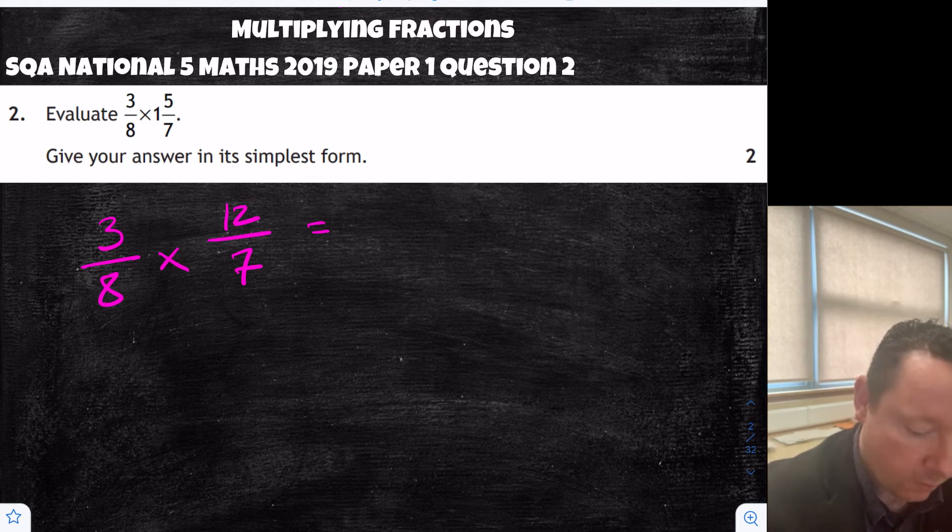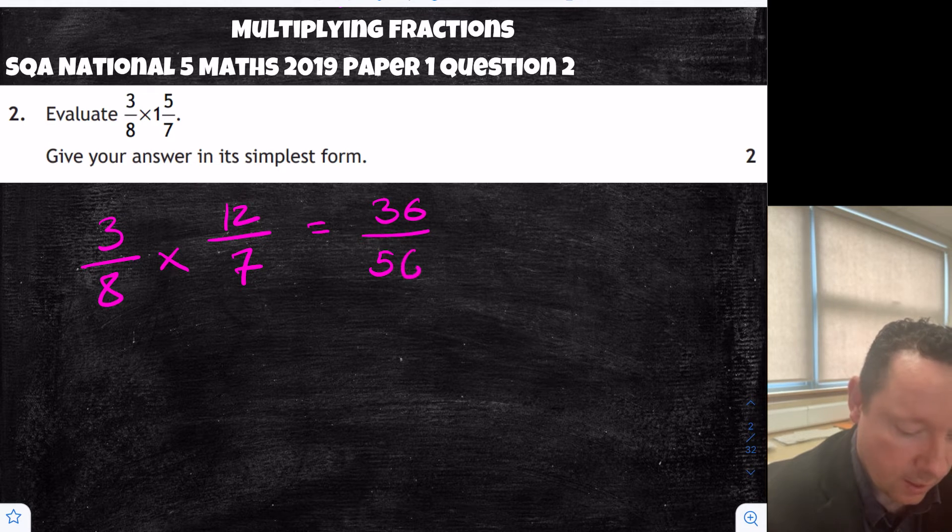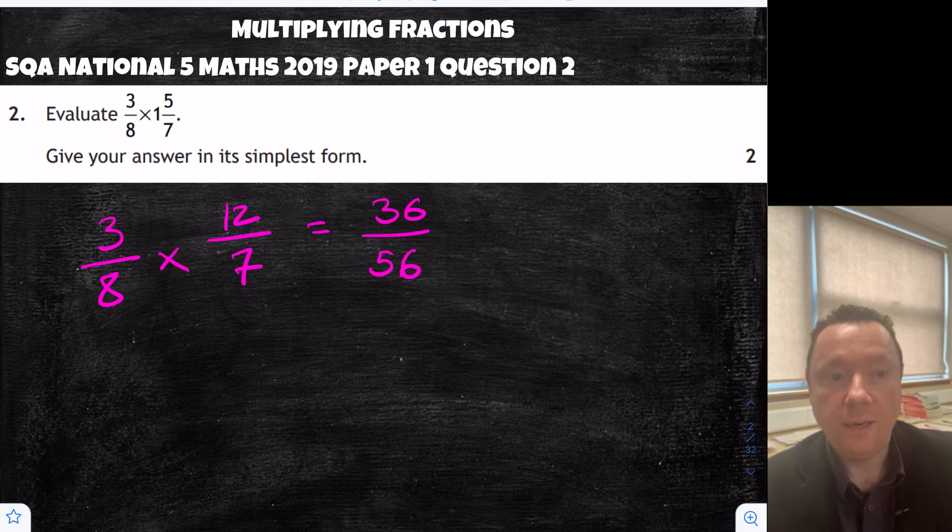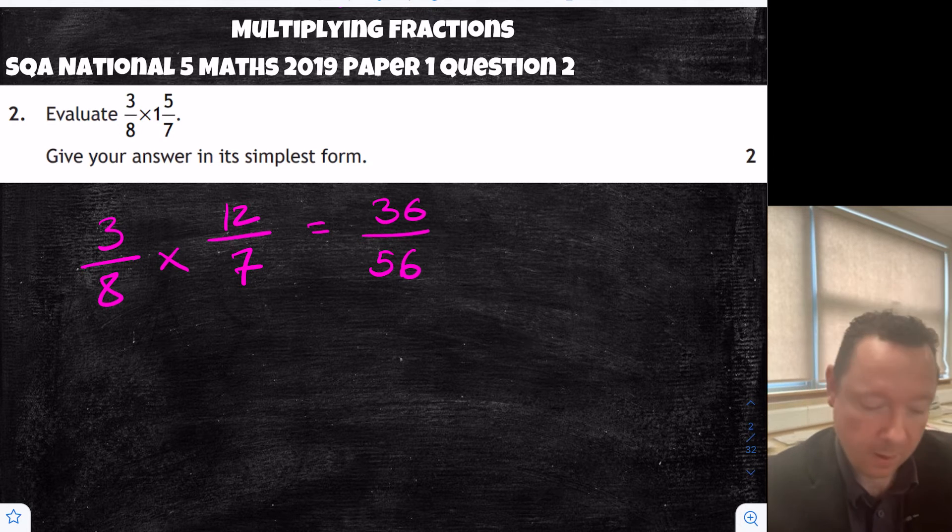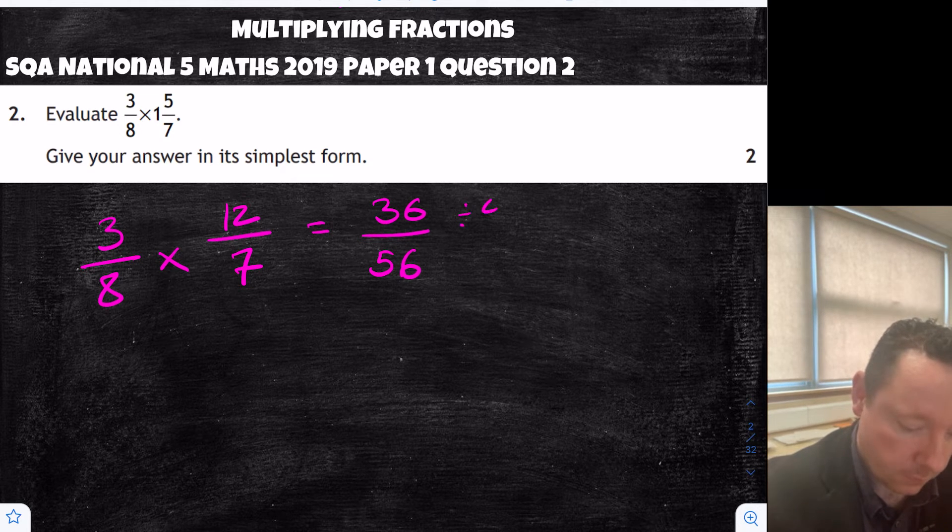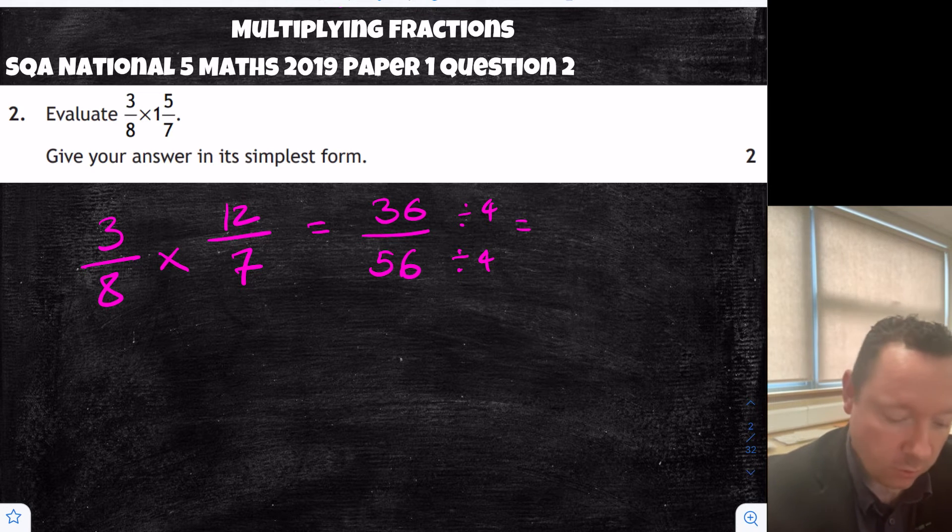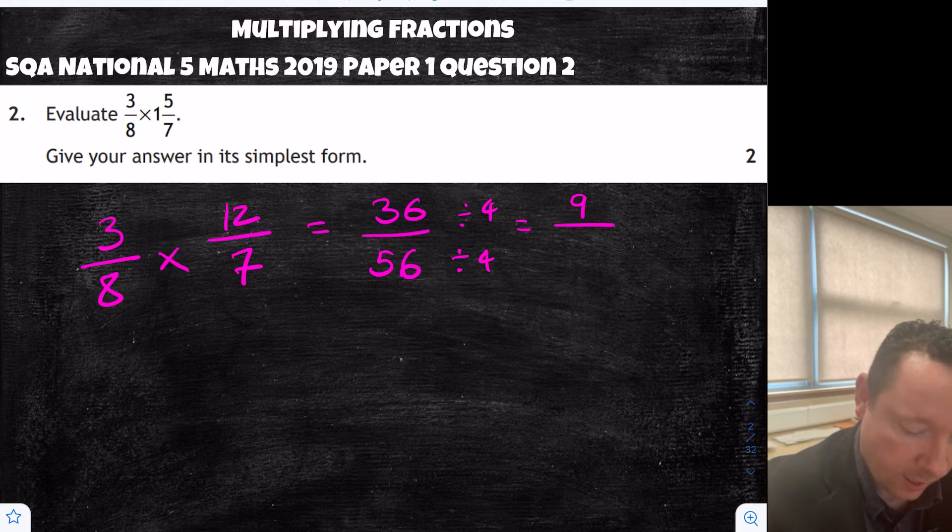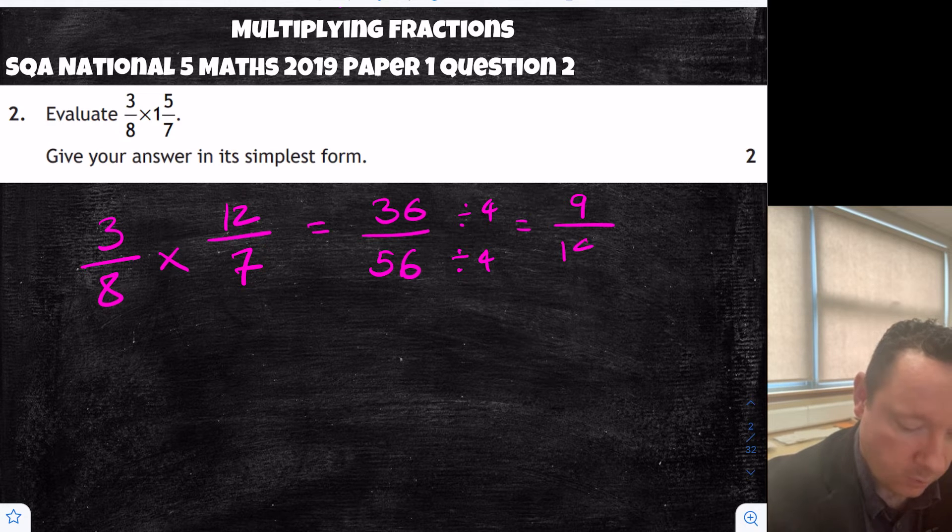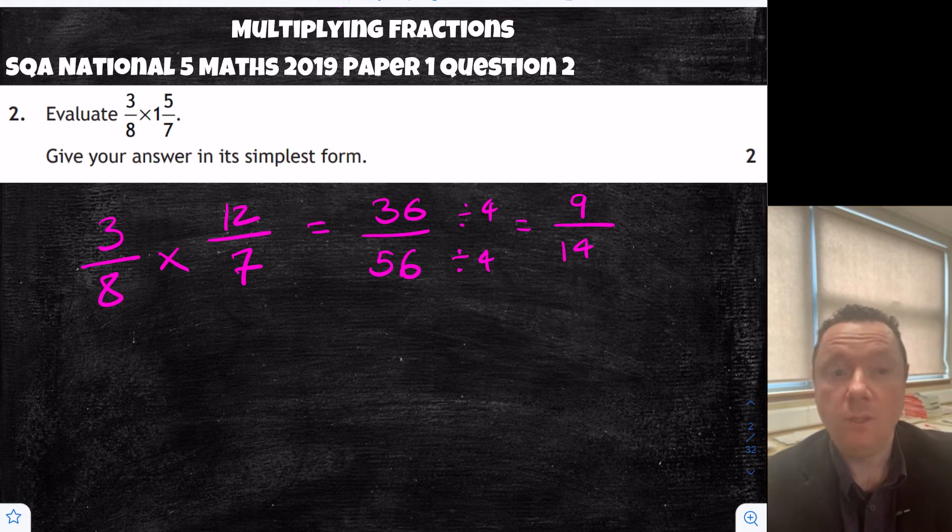So 3 times 12 is 36, and 8 times 7 is 56. So now we need to find a way to simplify that. Let's try and divide by 4. Although you could just divide by 2 and then 2 again. So 4 into 36 is 9, and 4 into 56 goes 14 times. So we get 9 fourteenths. And we're done there.